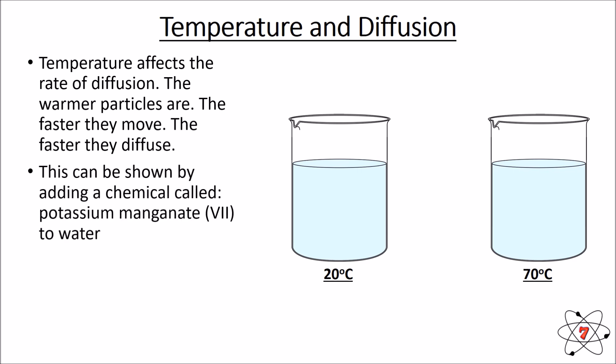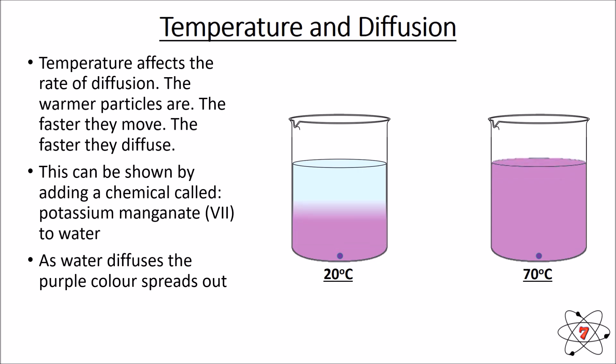And we can show this by adding a chemical called potassium manganate 7 to water. Potassium manganate 7 is a purple chemical and it will turn the water purple. So the water diffuses out and the purple colour spreads. Now we can see diffusion is much faster at 70 degrees than it is at 20 degrees because the particles at 70 degrees have more energy so the particles can spread out faster and diffusion is much faster at a higher temperature.